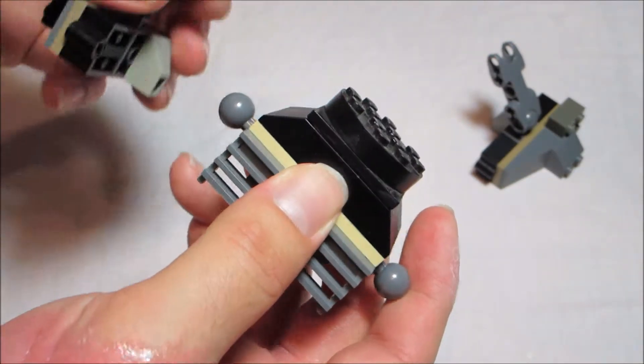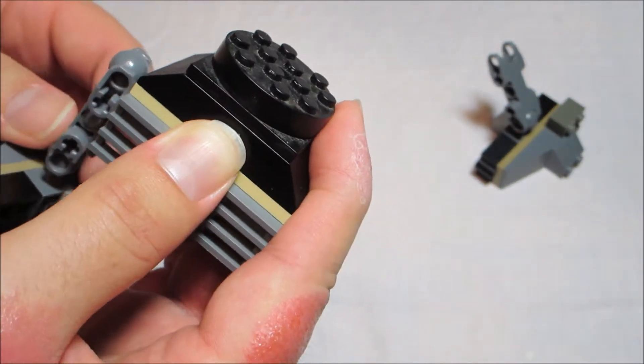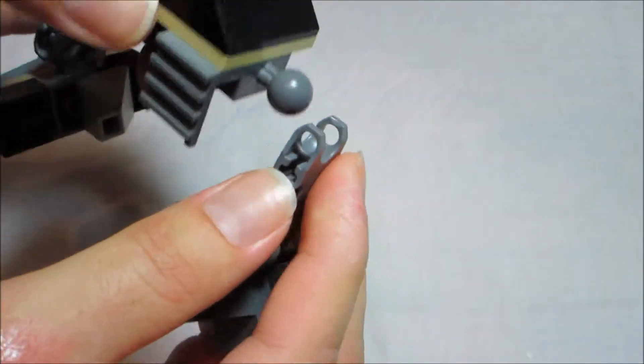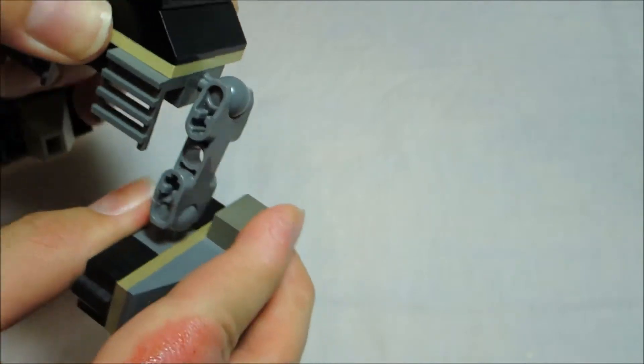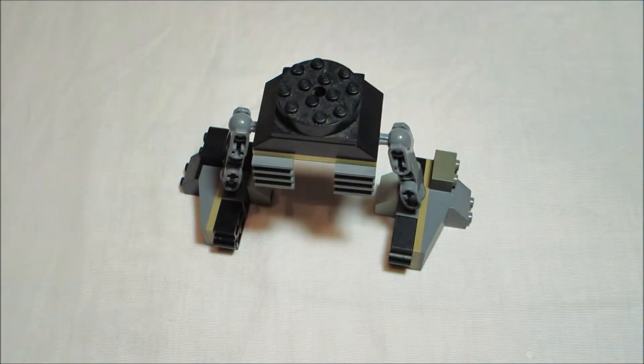So we'll put the legs on. And the turntable on top will provide torso support and 360 degree mobility. So our legs and waist are complete.